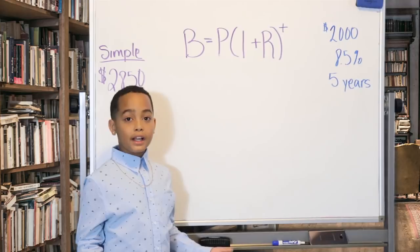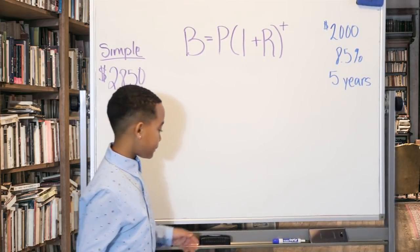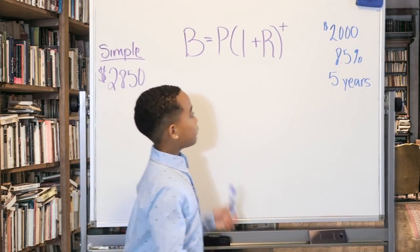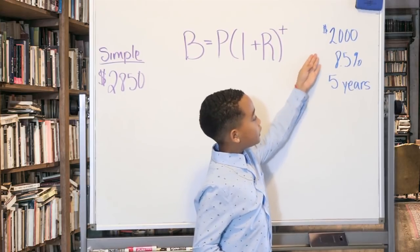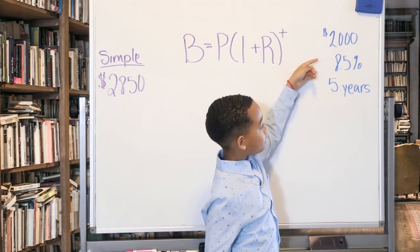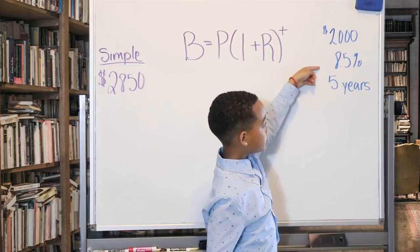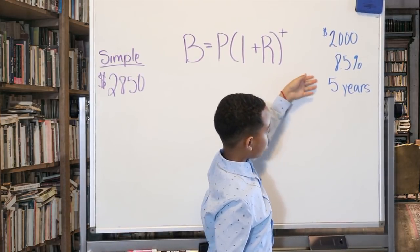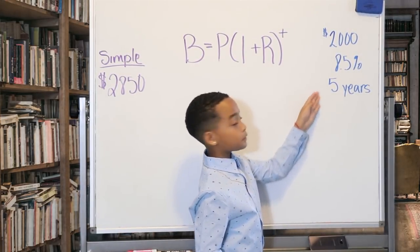We're going to use the same problem we used last time for simple interest. Now remember, 2000 was my principal, my rate expressed as a decimal was 8.5%, and my time in years was 5.